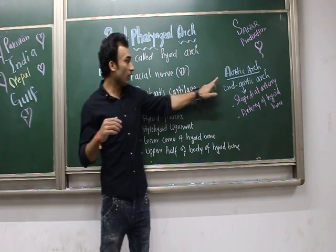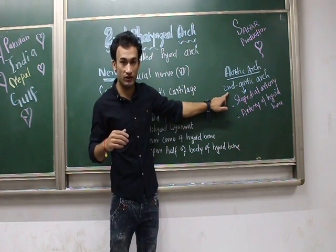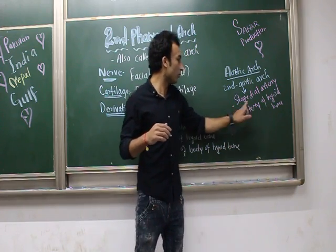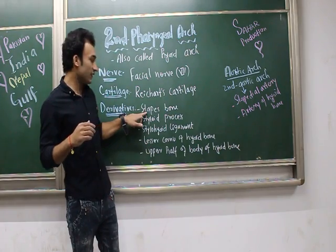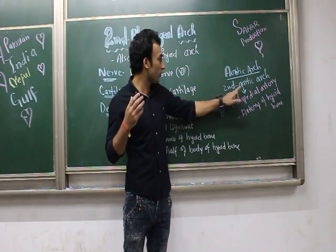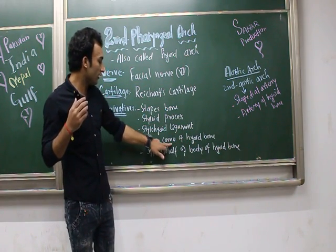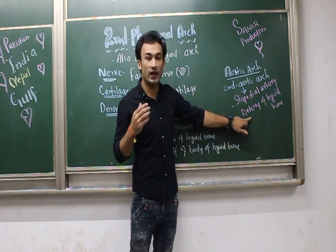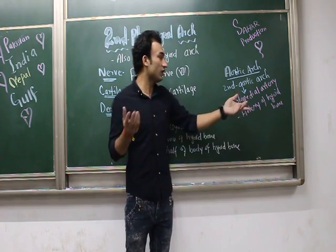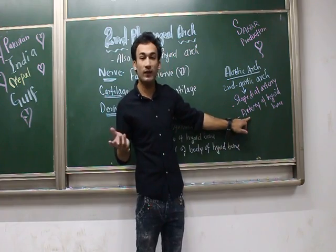The aortic arch for the second pharyngeal arch is the second aortic arch, which gives rise to the stapedial artery and the artery of the hyoid bone. Because it supplies the upper half of the hyoid bone and the lesser horn of the hyoid bone, we can call it the artery of the hyoid bone. This is an important MCQ point.